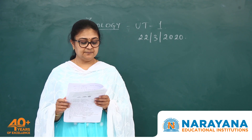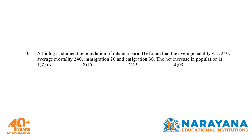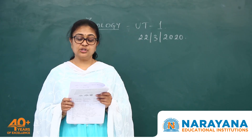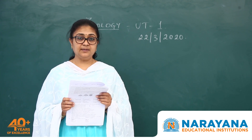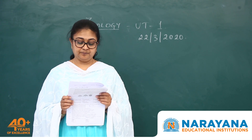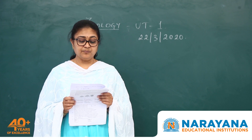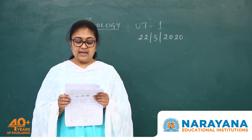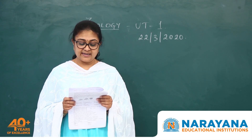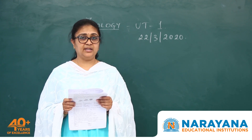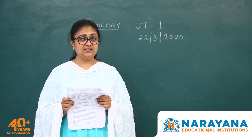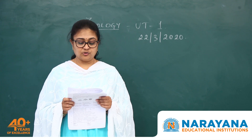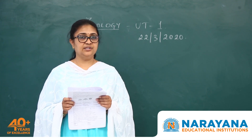Question 150: a biologist studied the population of rats in a barn. Average natality was 250, average mortality 240, immigration 20, and emigration 30. The net increase in population is calculated as follows: natality and immigration contribute to increase, so 250 plus 20 equals 270. Mortality and emigration contribute to loss, so 240 plus 30 equals 270. Therefore the net increase in population is 0. That's option 1.